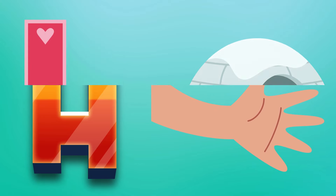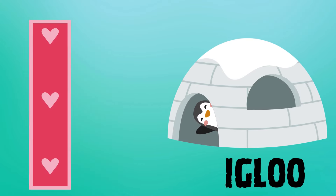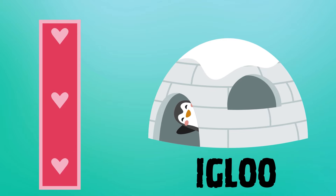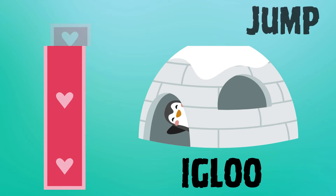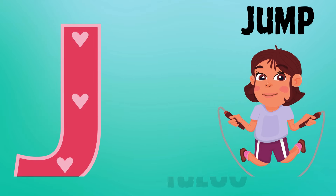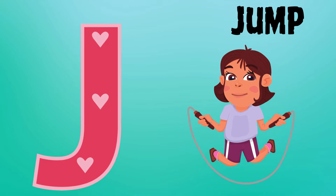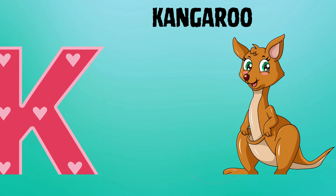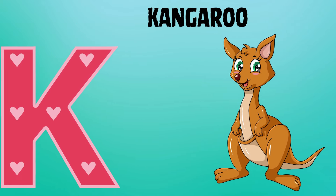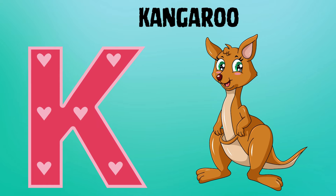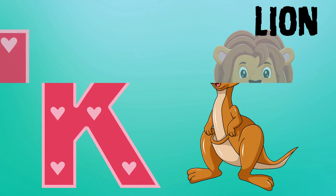I is for igloo, i-i-igloo. J is for jump, j-j-jump. K is for kangaroo, k-k-kangaroo.